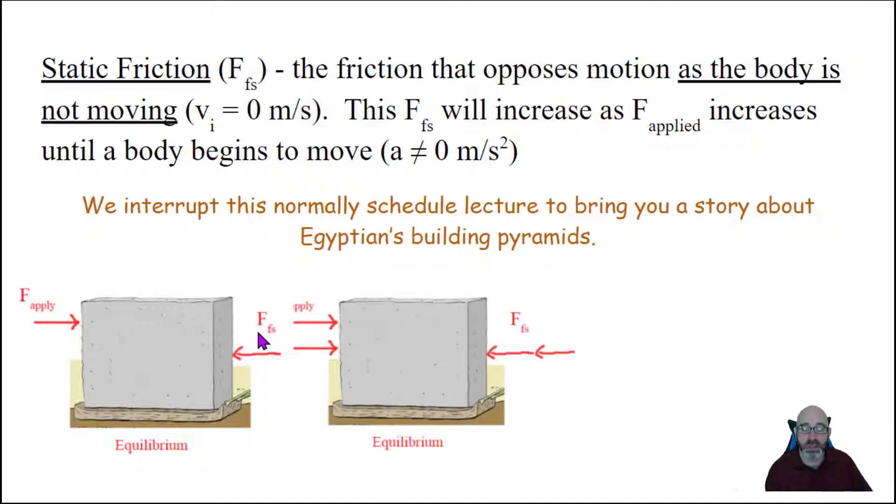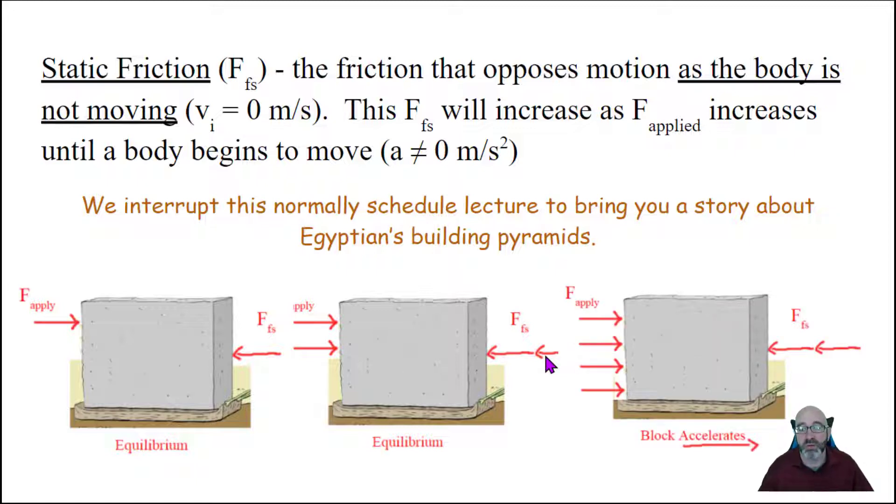But then that worker gets a buddy, and two people push on this side of the block. And the force of friction is still bigger than, or still equal to that force. And the block doesn't move, it's still at rest. But if you get a third and a fourth worker to apply a force in this direction, now they can overcome the force of static friction, and they can get the block to start to move.